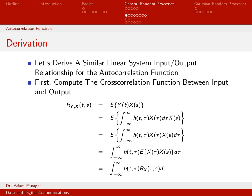We put the expectation operator around only the random components of the expression. Since h(t, τ) is a deterministic function and not a random process, it doesn't need to go inside the expectation. By definition, the expected value of x(τ) times x(s) is just the autocorrelation function of x, which simplifies to r_x(τ, s). So we've written the cross-correlation function between y and x as an integral expression involving h and r_x, which we'll use in the following step.